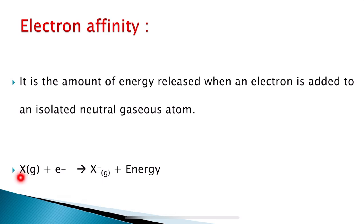For example, X is an isolated neutral gaseous atom. When an electron is added to this neutral gaseous atom, there is an amount of energy released — that released energy measures the electron affinity.